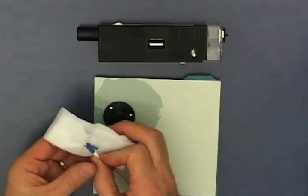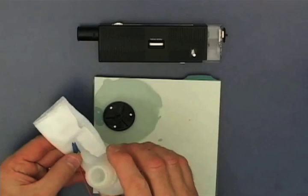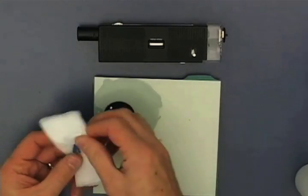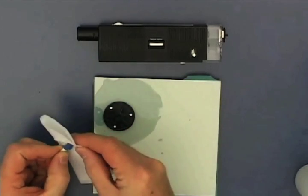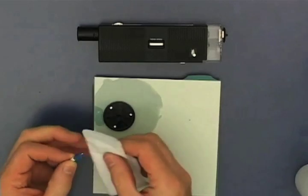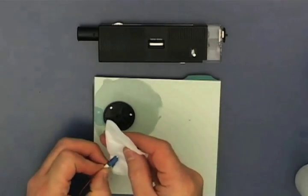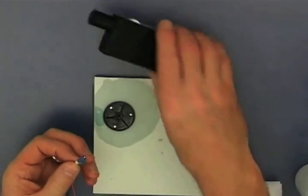Clean with a wipe moistened in alcohol, then dry on another part of the wipe. Check the connector tip using a microscope.